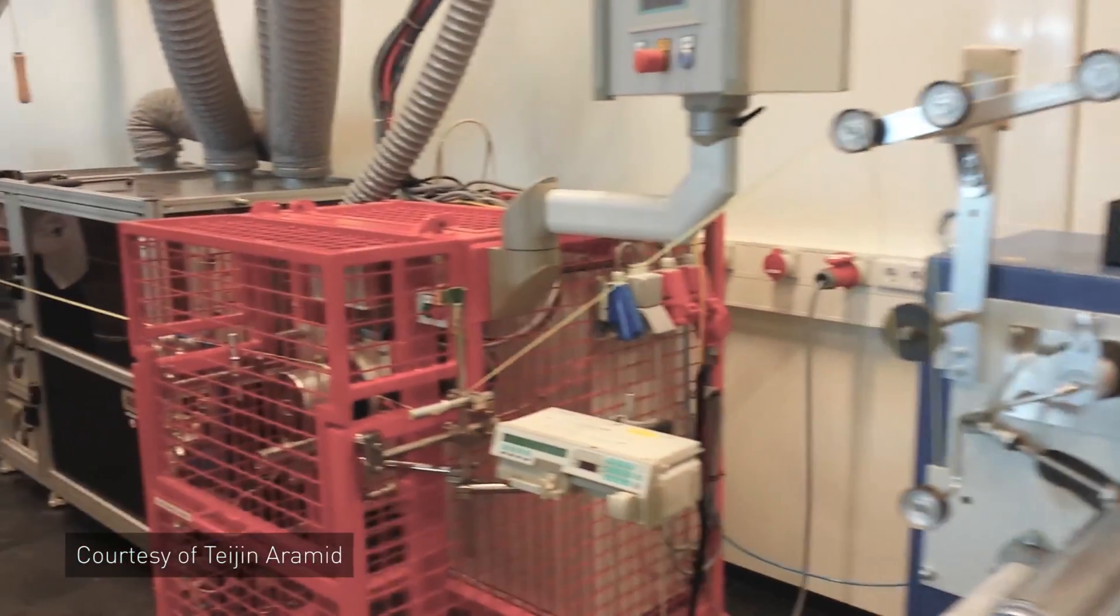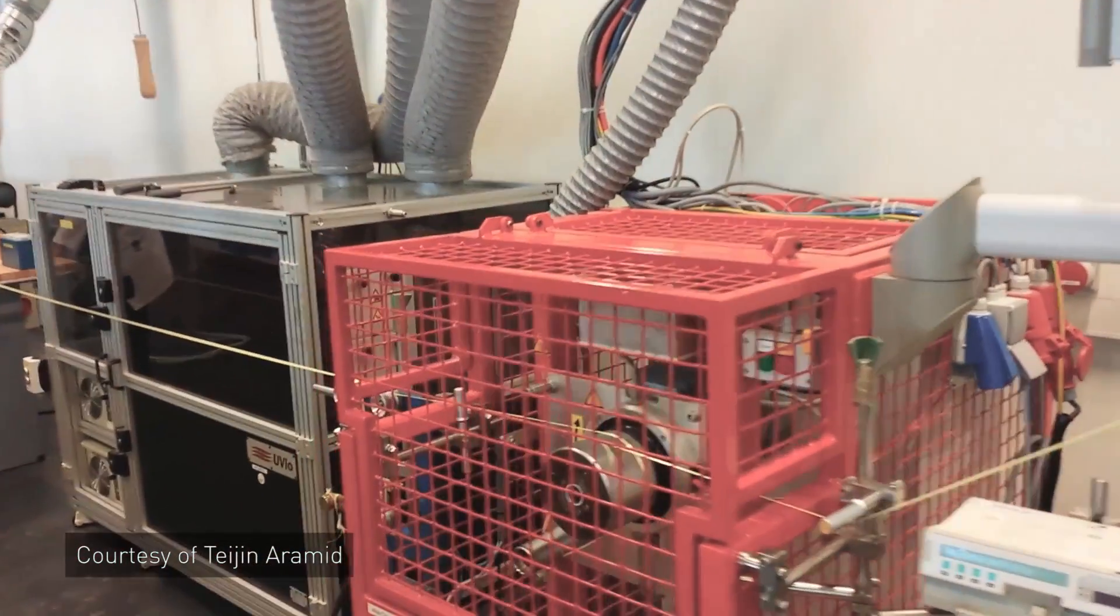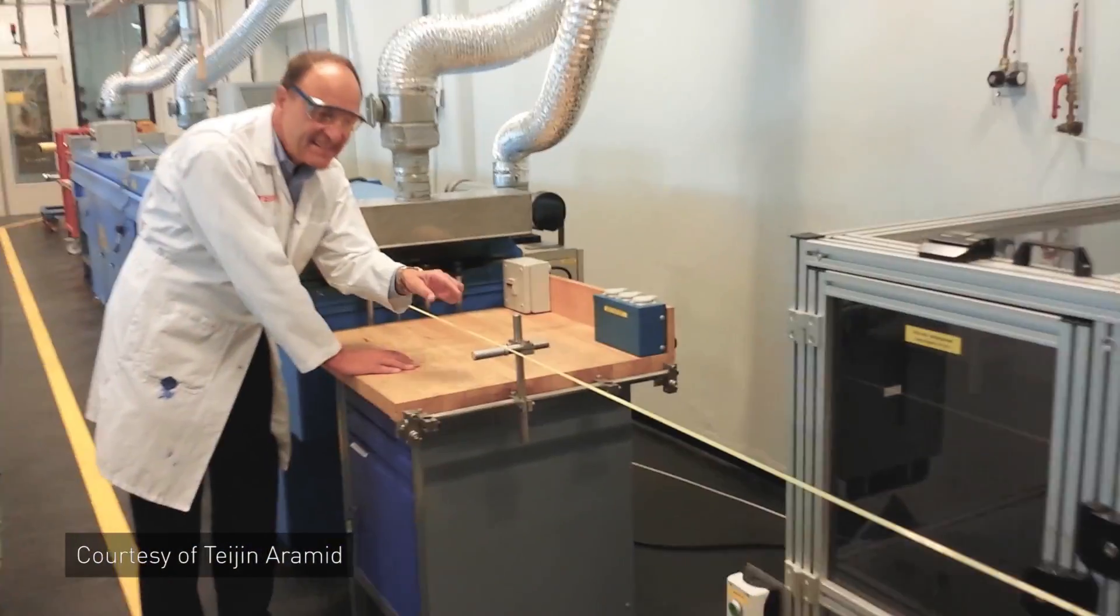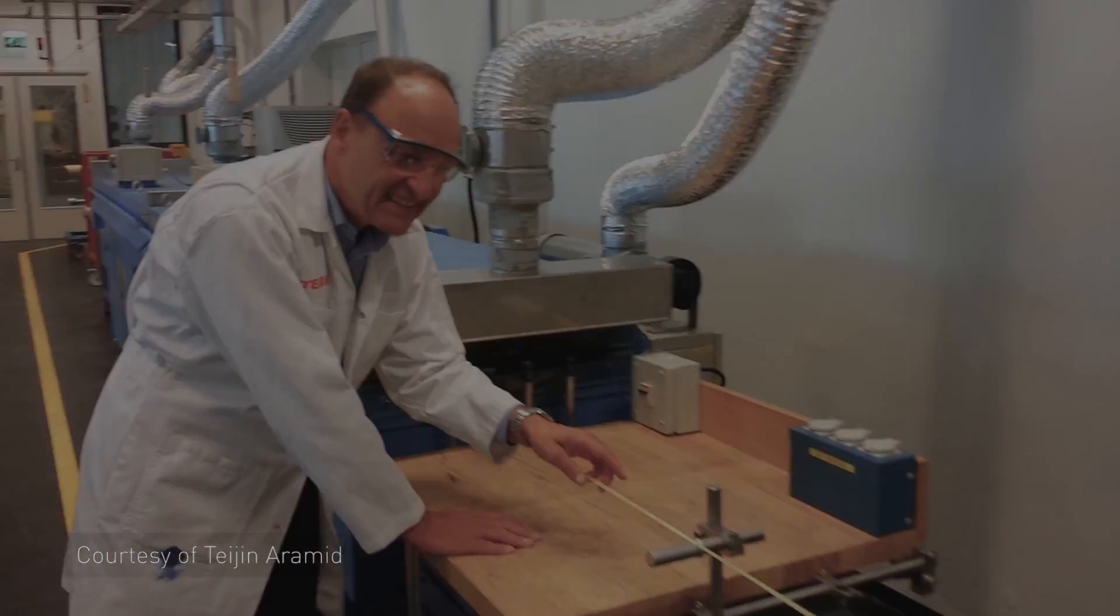Rice University and Tejin Aramid Corporation developed a spinning method for carbon nanotube yarn conductors. This strong new material conducts electricity well and has potential to outperform copper in conductivity.